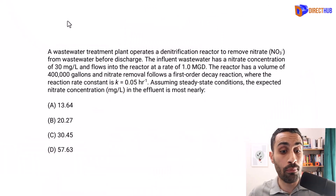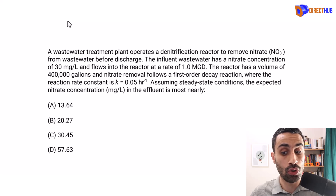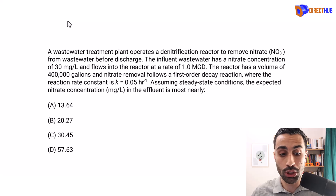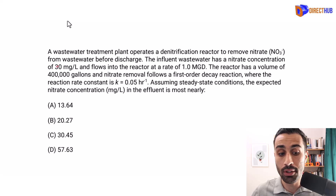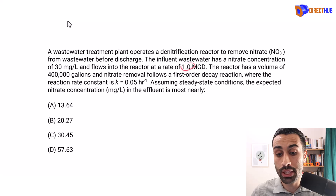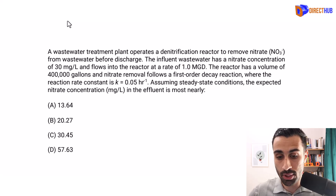We're told a wastewater treatment plant operates a denitrification reactor to remove nitrate NO3- from wastewater before discharge. The influent wastewater has a nitrate concentration of 30 mg/L and flows into the reactor at a rate of 1 MGD — million gallons per day — which is very common in U.S. units.